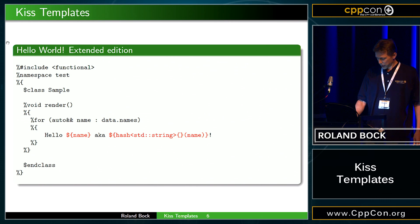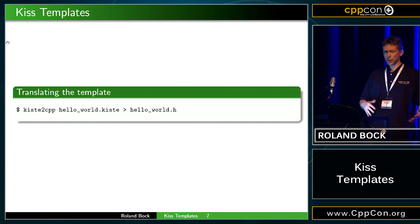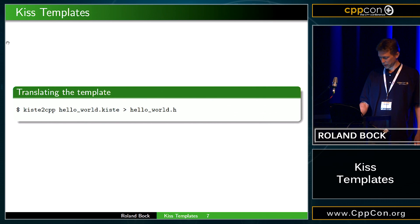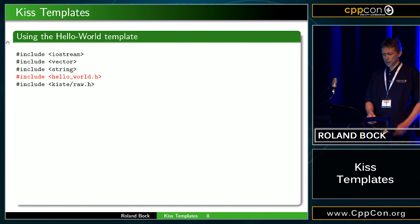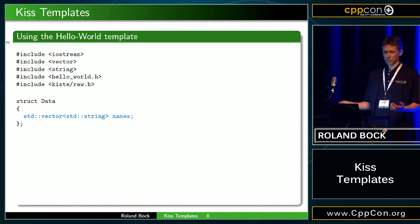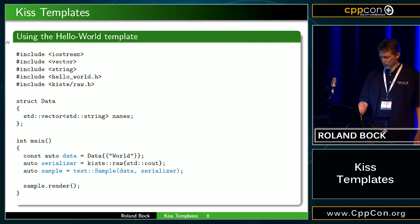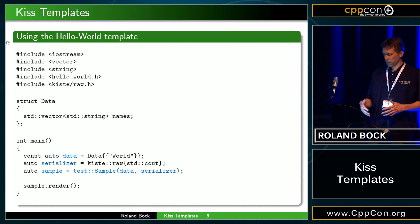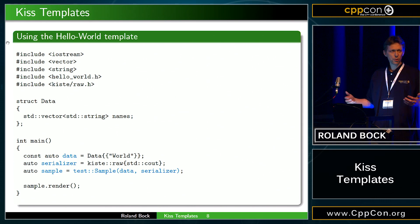Clearly this is not C++, so we have to generate C++ from it. This kind of command turns a template into a header file. Then we can use this header file in our own C++ code. We have some data structure that has to match the stuff that we do in the template. Then we initialize the data, initialize a serializer — some serializer, depending on the format that we want to produce.